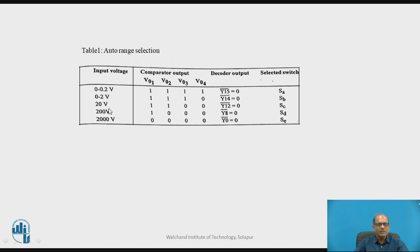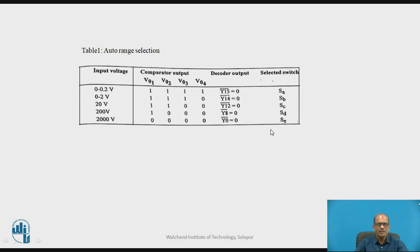Similarly, whenever the input voltage is 20V, Y12 is selected, which controls switch SC. Whenever the input voltage is 200V, VO1 is 1 and the remaining three outputs are 0, so Y8 goes low and switch SD is selected. Whenever the input voltage is 2000V, the outputs of all comparators are low, and therefore Y0 is selected and switch SE is selected.